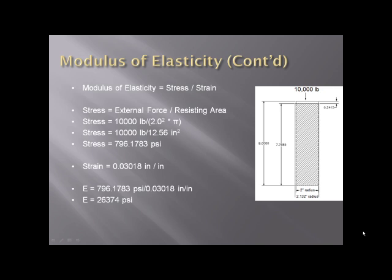What's the strain? The strain in the axial direction. We know strain is change of length divided by original length. My change of length here is 0.2415 inches. My original length is 8 inches. So if I say 0.2415 divided by 8, I'll come out with a little over 0.03 inches per inch. What would my modulus be then? Modulus is stress, about 796 PSI, divided by strain, a little bit over 0.03 inches per inch. It comes out to be just a shade under 26,400 PSI.